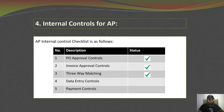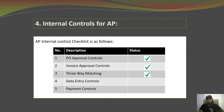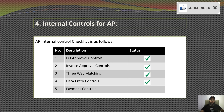The third internal control is three-way matching. The accounts payable process uses a technique known as three-way matching to ensure that only valid and accurate vendor invoices are recorded and paid. Three-way matching involves matching three important documents: number one, the purchase order; number two, the goods receiving report; and number three, the supplier invoice. Only if all three documents are in agreement will a vendor's invoice be entered into the accounts payable account and scheduled for payment.